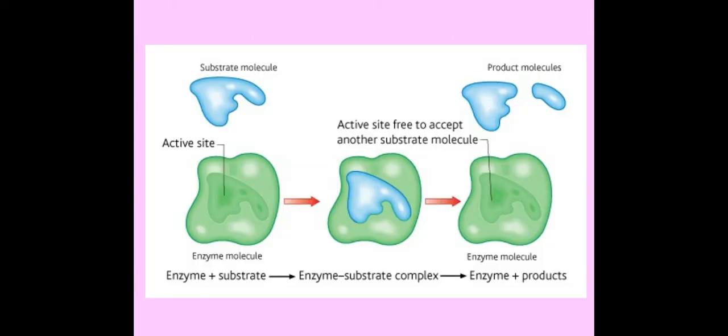So this is a pictured example of this. As you can see here I've got my substrate. It has a specific and complementary shape to the active site. It's really important there that you say it has a specific and complementary shape to the active site and not the enzyme. You get zero marks for saying it's complementary to the enzyme. We have to make that link to the active site.